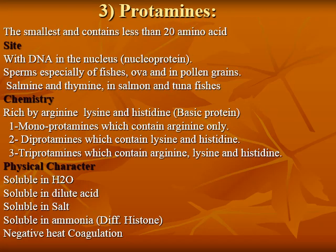The third type of simple protein is protamines. Protamines are the smallest proteins, containing fewer than 20 amino acids. They are present in DNA in the nucleus, in sperm especially of fish, in ova, and in pollen grains. They are found in salmon and thymine. Protamines are rich in arginine, glycine, and histidine, which are basic proteins.